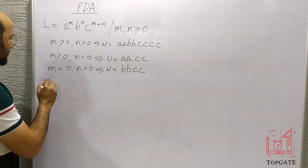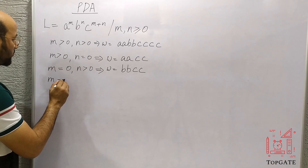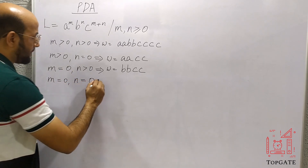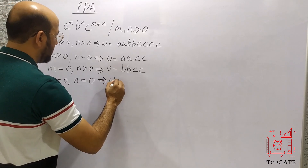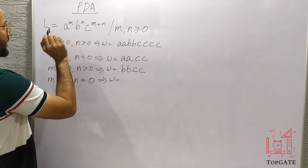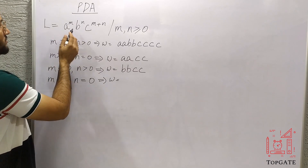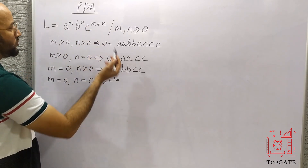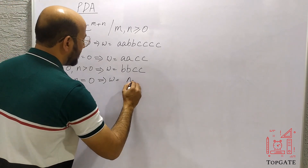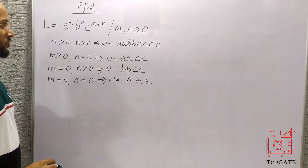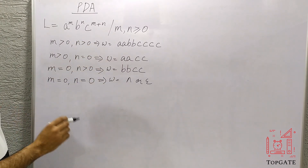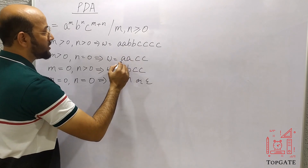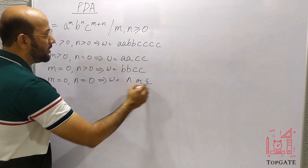The final case is if m equals zero and n also equals zero. Then the string we get will have no a's, no b's, and since there are no a's and no b's, c will be zero plus zero equals zero as well. So we get null — that is epsilon. We need to design a PDA that accepts all these kinds of strings.